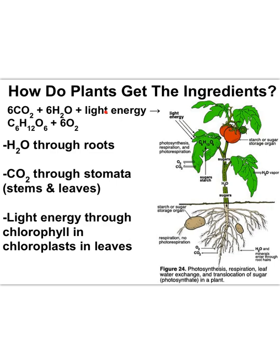Let's check out photosynthesis as a chemical equation. Using the energy input from light, photosynthesis puts together six carbon dioxides and six waters to make each glucose molecule. And along the way, six oxygen molecules are made as well.